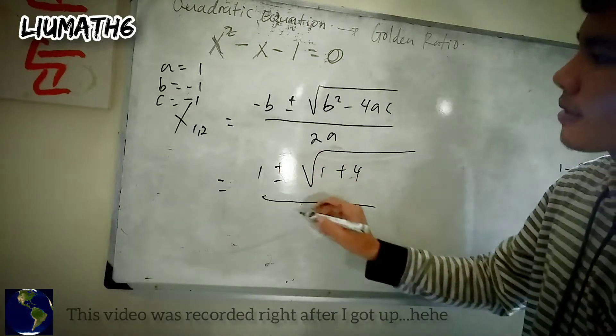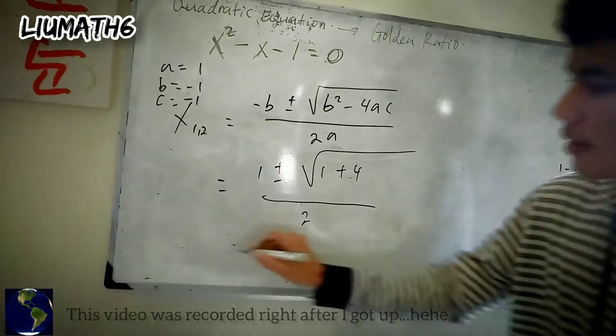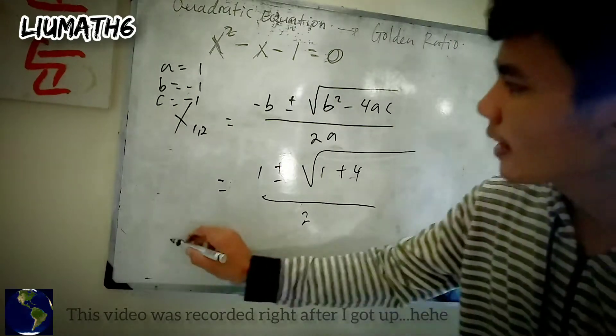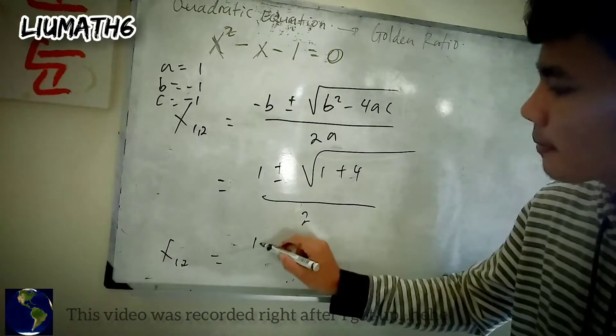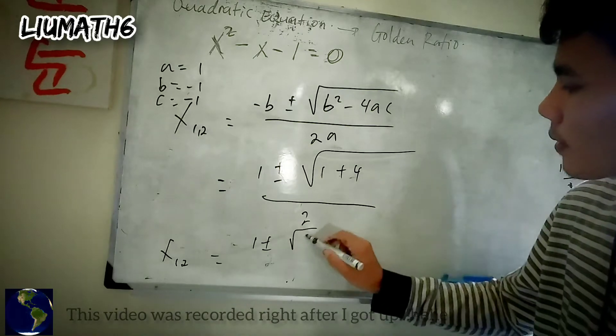All over 2a, so 2. So from here we get x1, x2. It's going to be 1 plus or minus the square root of 5, all over 2.